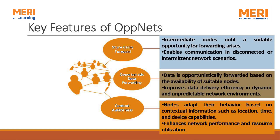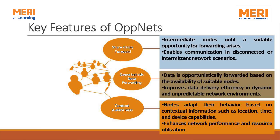The key features of OpNets include the store-and-carry-forward approach, where intermediate nodes store the message until a suitable forwarding opportunity is found, enabling communication in disconnected or intermittent network scenarios. Another feature is opportunistic data forwarding, where data is forwarded based on the availability of suitable nodes, improving data delivery efficiency in dynamic network environments. There is also context awareness — nodes follow history-based rules, adapting their behavior based on previous encounter history and contextual information such as location, time, and device capabilities, enhancing network performance and utilization.